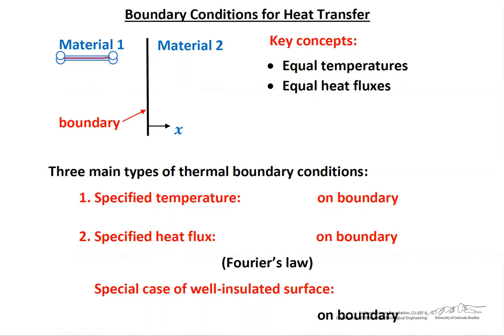We have material one on the left and material two on the right, with a boundary between those two materials. The key concepts are that the temperatures are equal at that boundary and the fluxes are equal at that boundary.